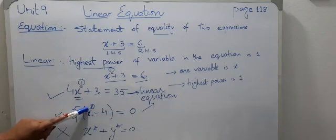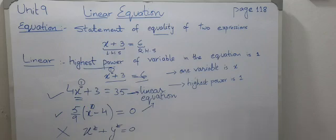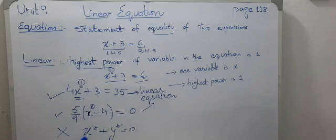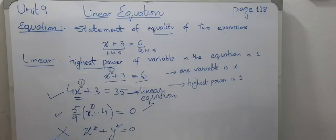If I take x squared plus y squared equals 0, you can see there are two variables, x and y, and the highest power is 2. So this is not a linear equation.